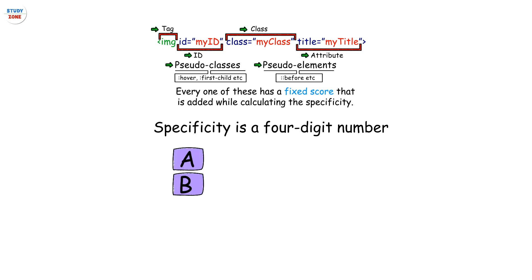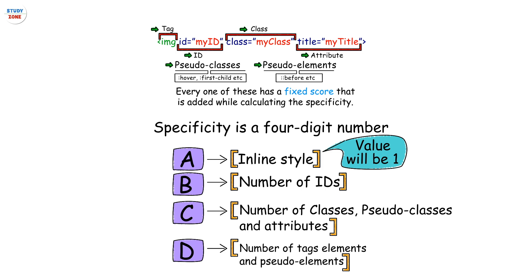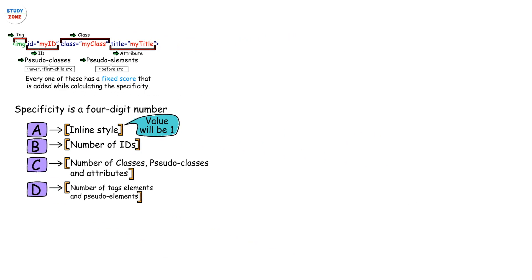Specificity is a four-digit number A B C D, where A represents the inline style. If there is any inline style applied, its value will be 1. B is the total number of IDs used in the selector. C is the count of classes, pseudo-classes and attributes used in the selector. And D is the count of tags and pseudo-elements.